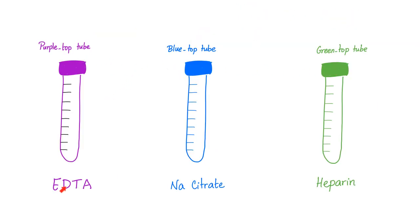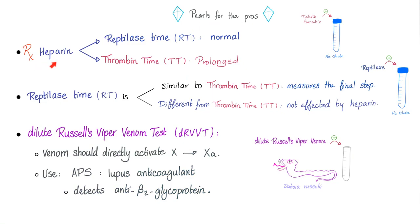These are the colors of the test tubes and the anticoagulant in each. A pearl for advanced learners: heparin will prolong the thrombin time; however, the reptilase time is normal. Reptilase time is similar to thrombin time — it measures the final step, fibrinogen to fibrin — but unlike thrombin time, it is not affected by heparin. So heparin cannot prolong the reptilase time.